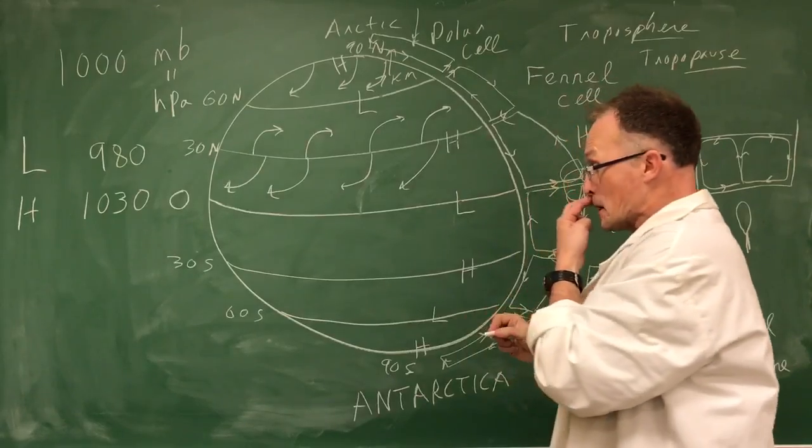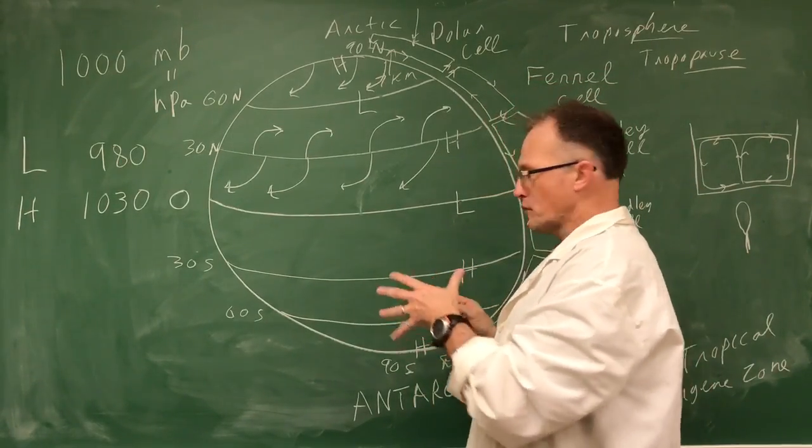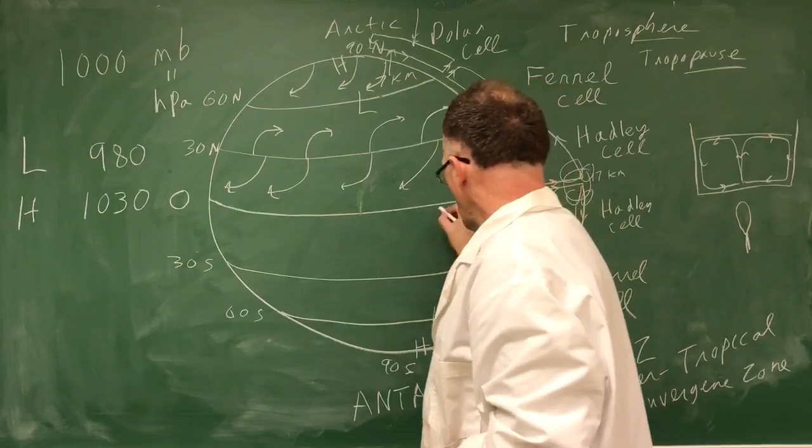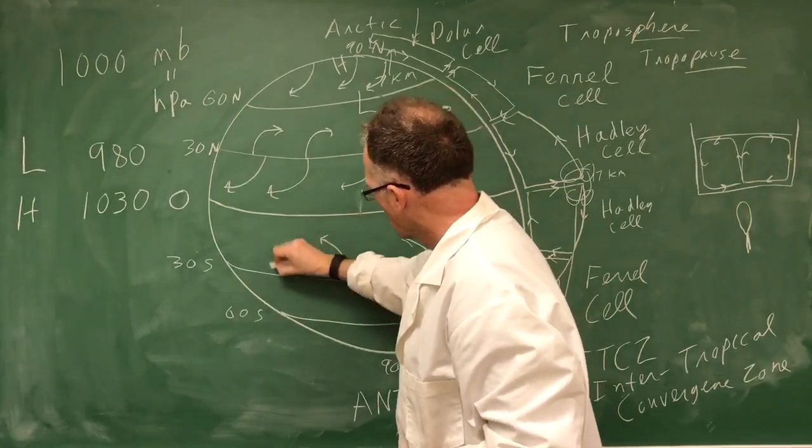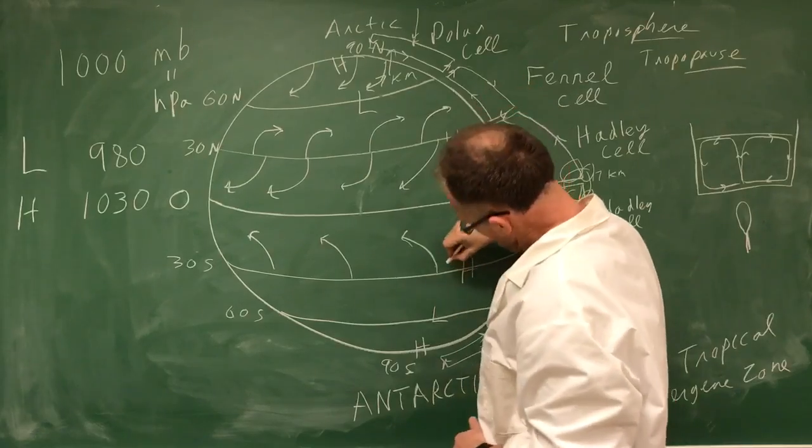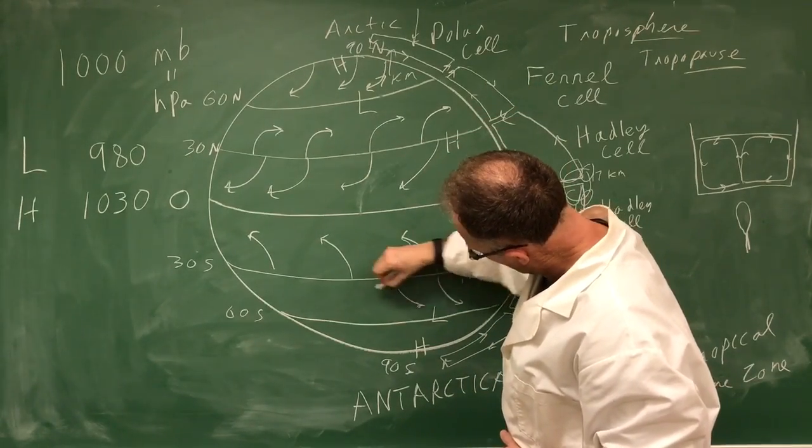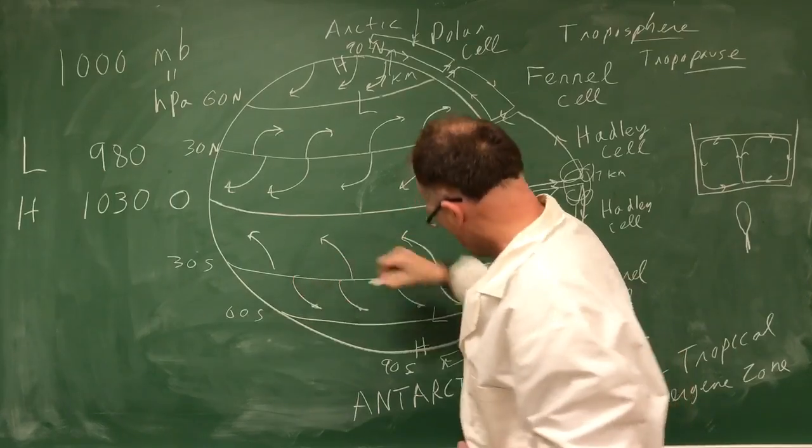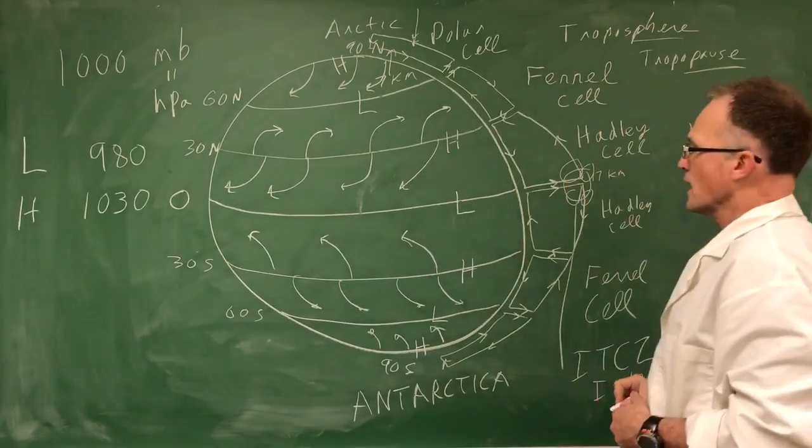Now in the southern hemisphere, it's opposite. The Coriolis force makes things deflect to the left. So high to low, we get a deflection to the left. High to low, we get a deflection to the left. By the low, we get a deflection to the left.